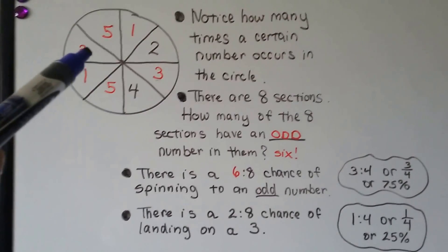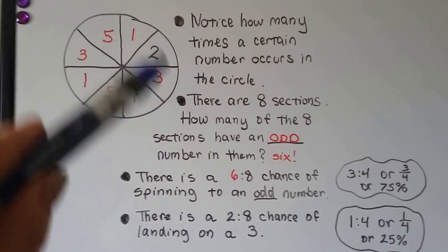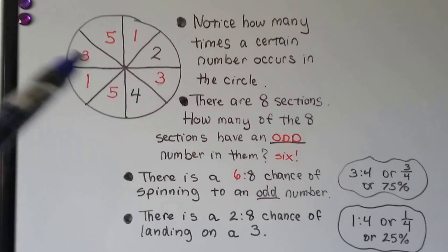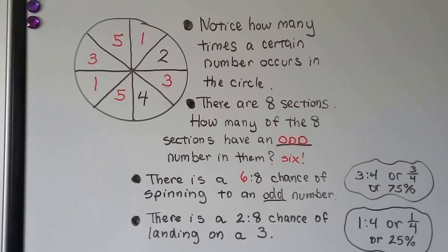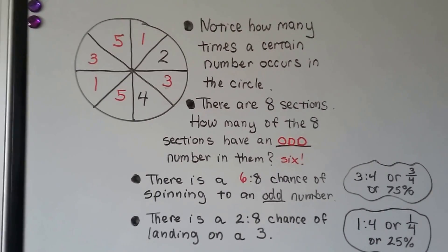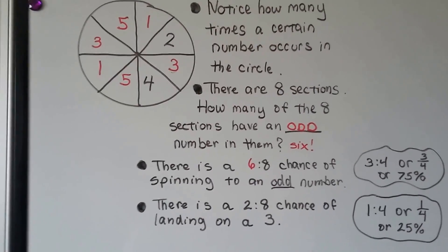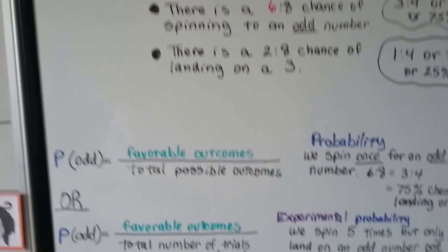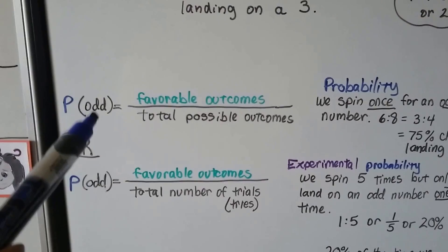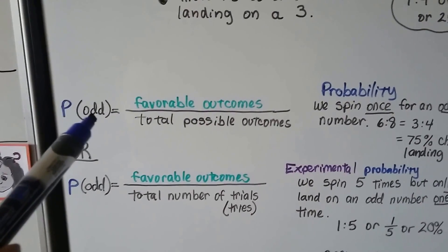So what you do is if you want to find the probability, you look at how many sections there are and how many of that one there are out of those sections. There's two threes out of eight sections. So it's two to eight. And it can be reduced.